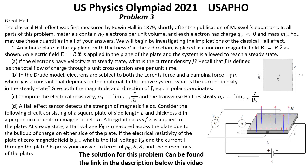U.S. Physics Olympiad year 2021, U.S. APHO Final Round, Problem number 3: Great Hall